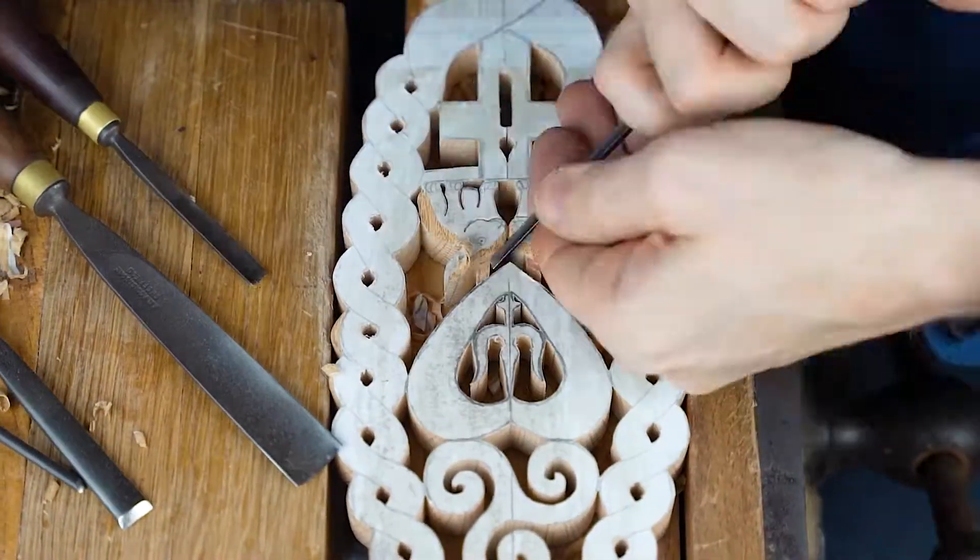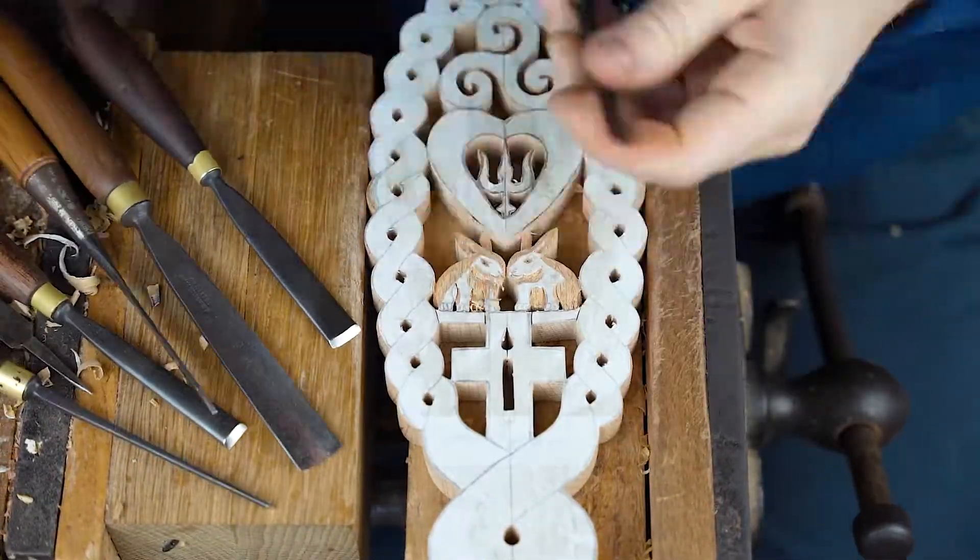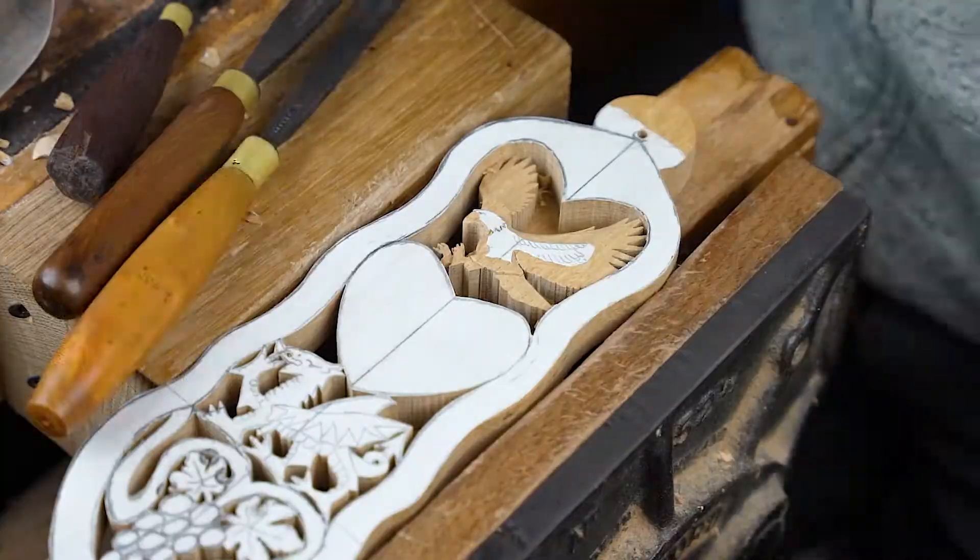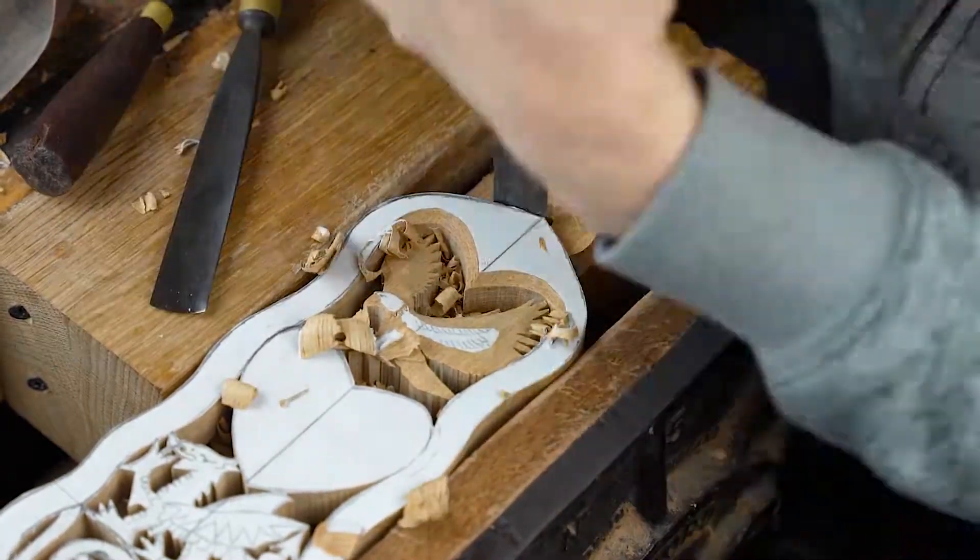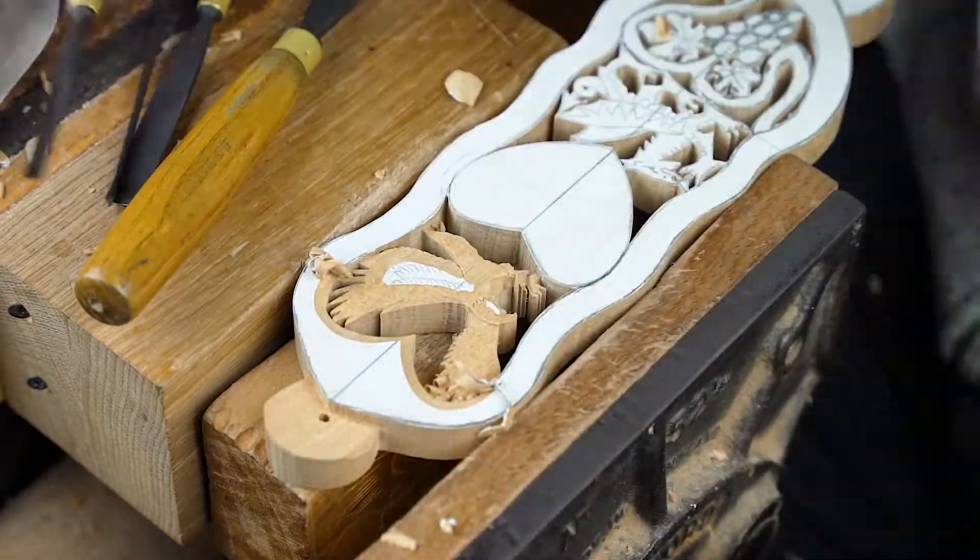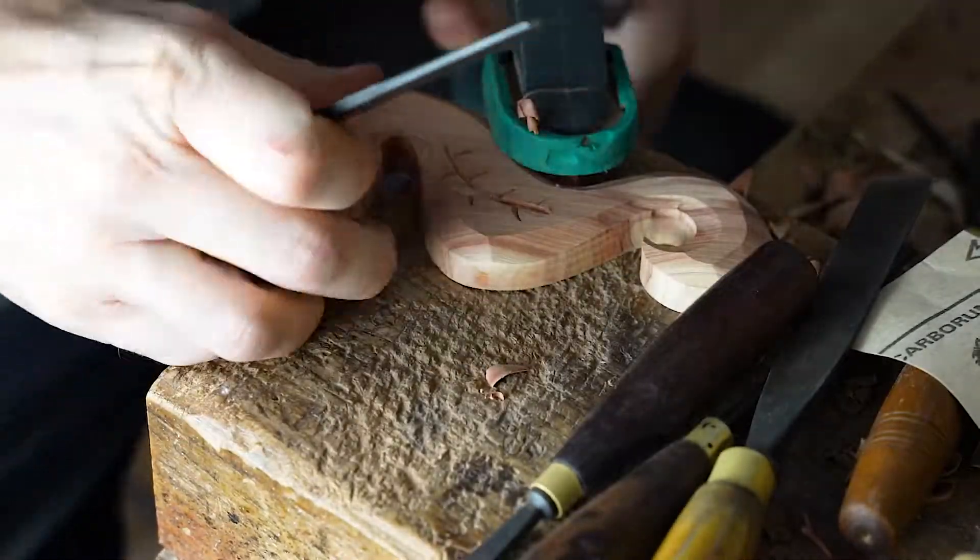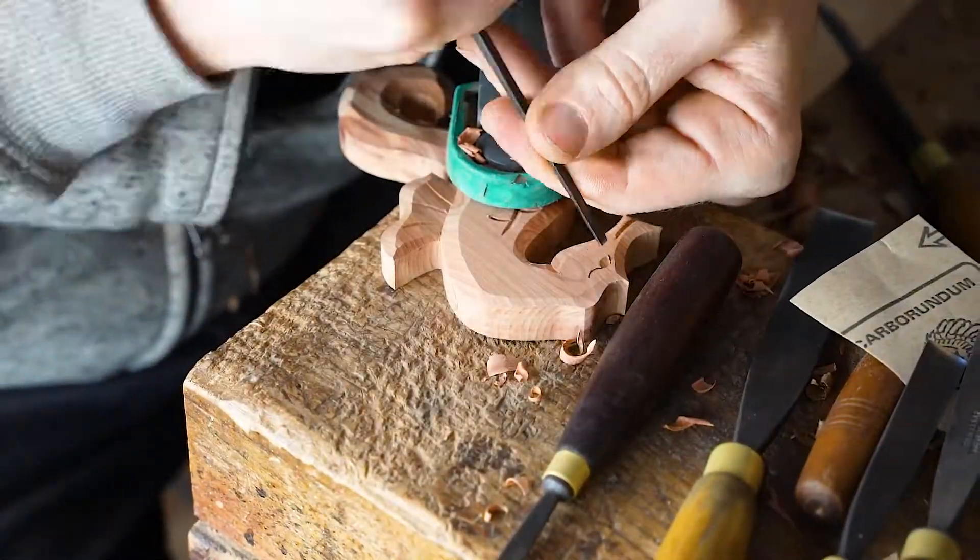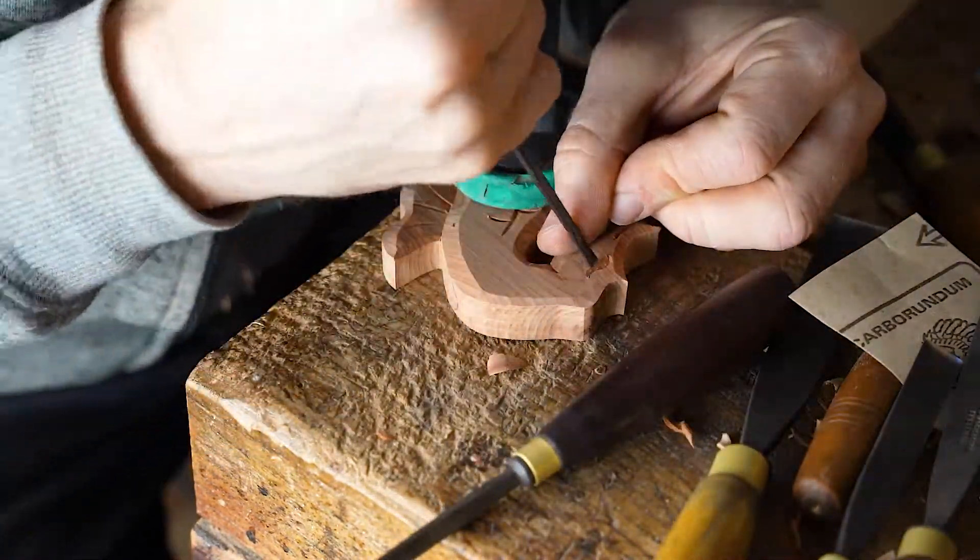Onto our fourth mistake that we make time and again, and you may be starting to realize that our big weakness here at our workshop is organization, and this one continues in that thread. Now when it comes to the equipment and the tools and the woods, organization is key and it can save you so much time. This mistake that we make time and again is not putting things back in the place they belong.